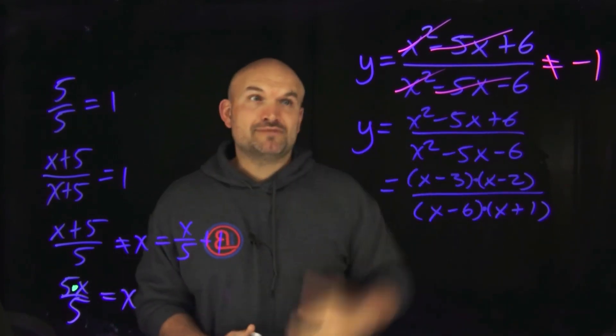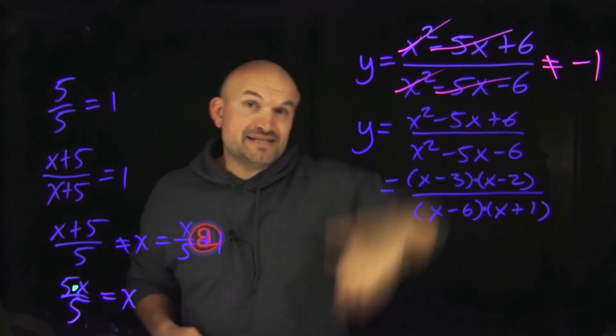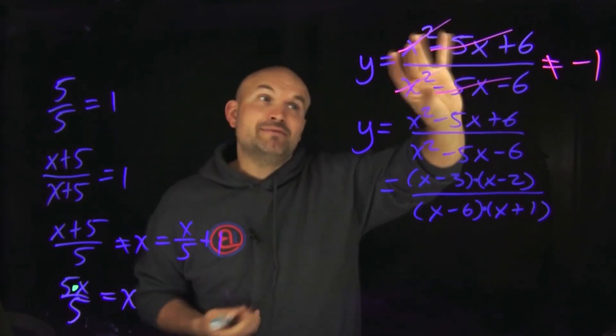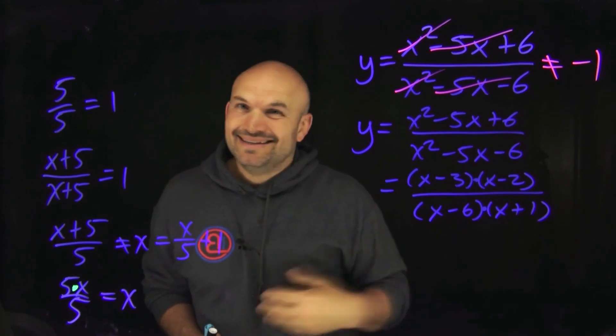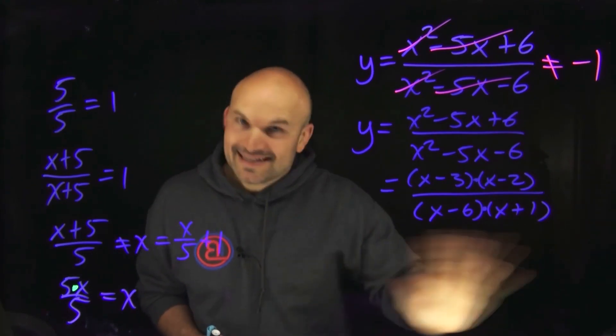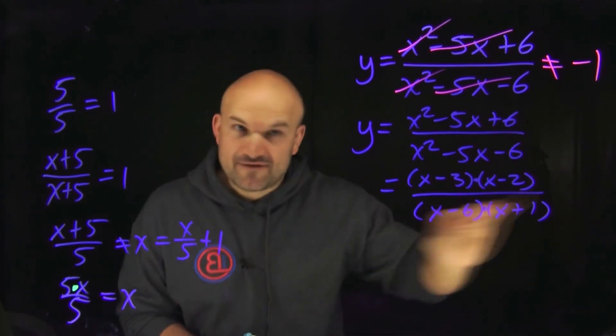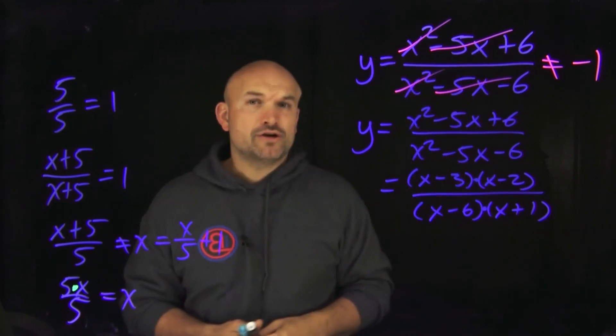So therefore, this is an example of a rational expression that looks like it should be able to be simplified, right? There's so many things that are the same in the numerator and denominator, but guess what? Nothing can be simplified. That's it. That is the final answer. That is the factored form, or you can just leave it in your original form.